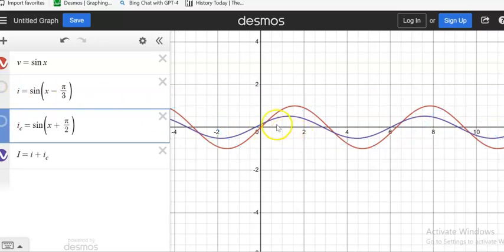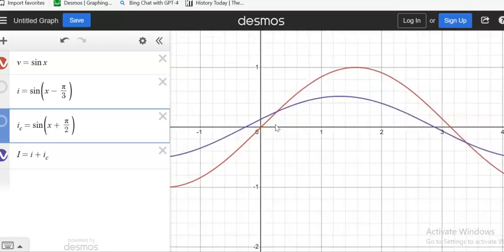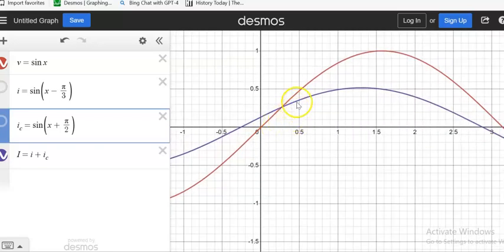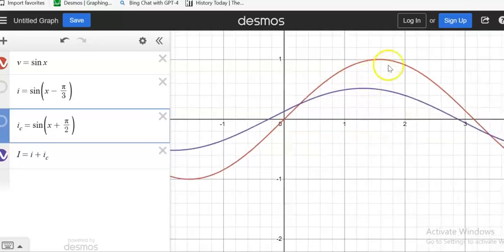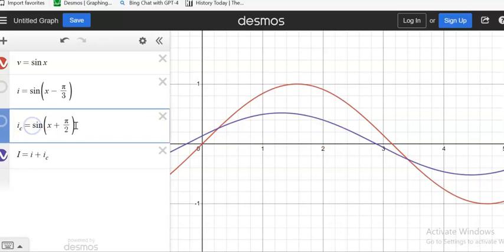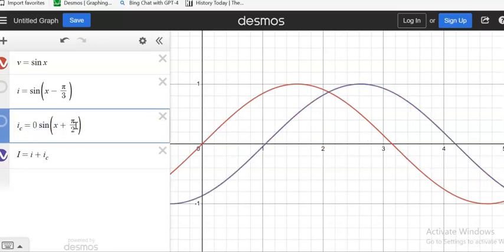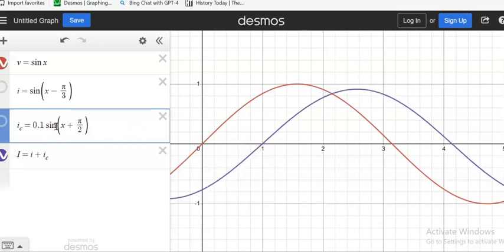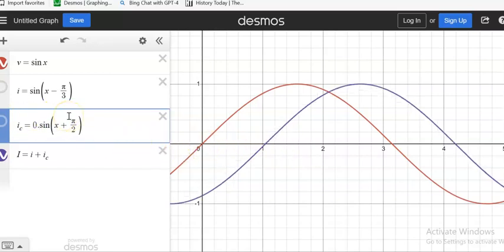Now see this one. This one is the voltage and this one is the total current. Suppose initially the capacitor current is zero. This was the phase difference between voltage and current. I'm gradually increasing the capacitor here, and you can see that the phase angle is slowly changing.